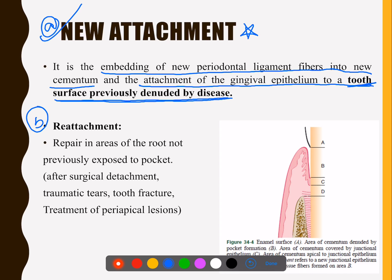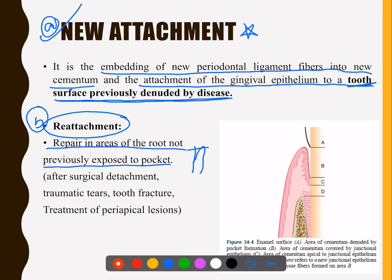Then reattachment. Reattachment is passively adapting the gingiva to the sulcus — there is no true attachment. Repair in areas of root not previously exposed to pocket is called reattachment. This applies in cases like tooth fracture or periapical lesion treatments — where there is no periodontal pocket problem but you still had to do a procedure — then you get reattachment.